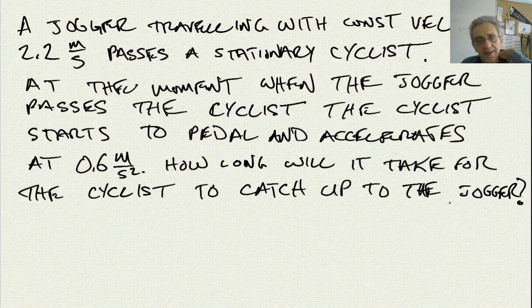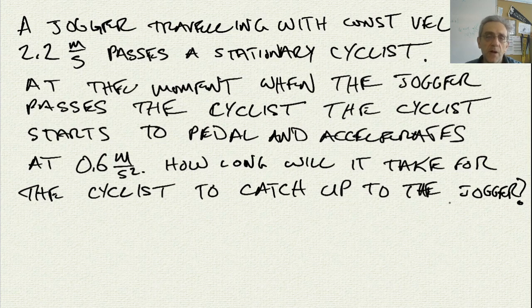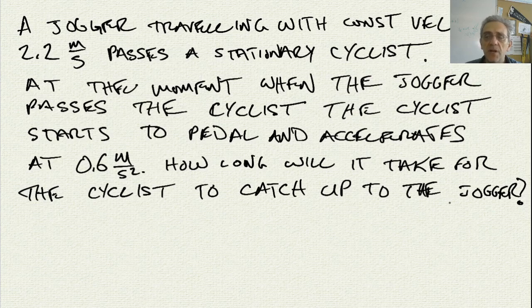Here we have a new kinematics problem. This is a very common one. It says a jogger traveling with constant velocity, 2.2 meters per second, passes a stationary cyclist. At the moment when the jogger passes the cyclist, the cyclist starts to pedal and accelerates at 0.6 meters per second squared. How long will it take in seconds for the cyclist to catch up to the jogger?